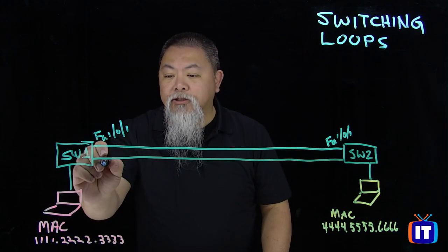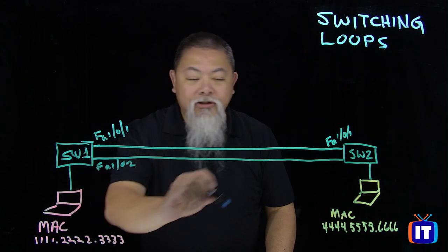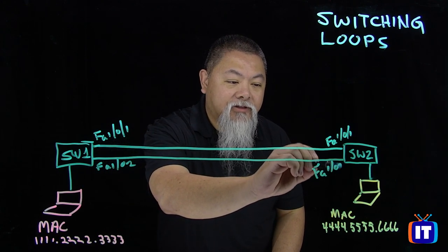So when we have these two links here, and we'll just add in an FA1 slash 0 slash 2, and also over here, FA1 slash 0 slash 2.